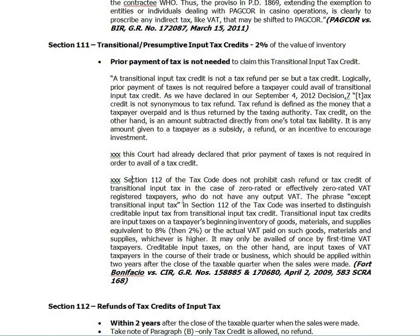Section 112 of the Tax Code does not prohibit cash refund or tax credit of transitional input tax for zero-rated or effectively zero-rated VAT-registered taxpayers who have no output VAT. Transitional input tax credits are input taxes on a taxpayer's beginning inventory of goods, materials, and supplies equivalent to 8% — then amended to 2% — or the actual VAT paid, whichever is higher. These are available only once to first-time VAT taxpayers. Creditable input taxes, on the other hand, are input taxes in the course of trade or business, applied within two years after the close of the taxable quarter when sales or payments were made.